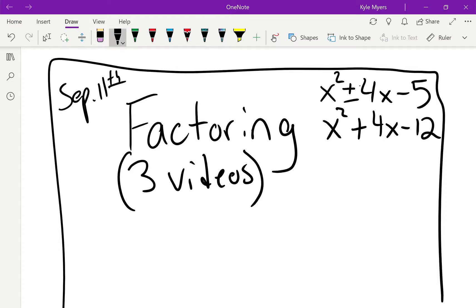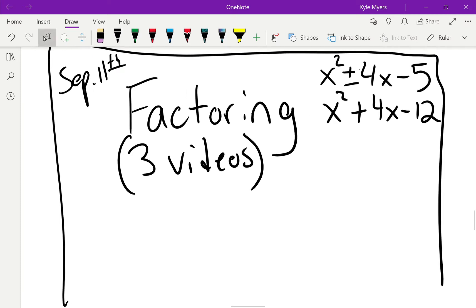This is x² + 4x - 5 and x² - 4x - 5, and then x² + 4x - 12. So let's just dive right in.